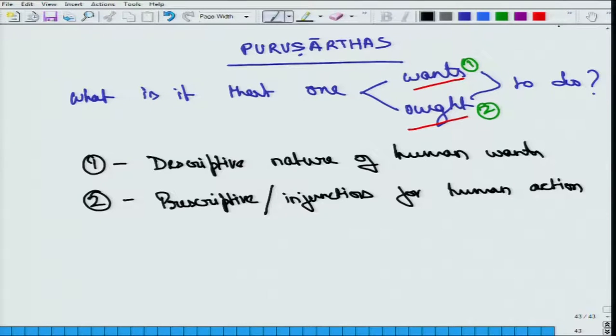Now let me write this here so that it is clear to you. This is what we talked about was want, and this is what we talked about was ought. Now the descriptive nature of human wants is well what we want, what is it that we desire. It is only about what we desire. And does that make it automatically what we should be wanting?